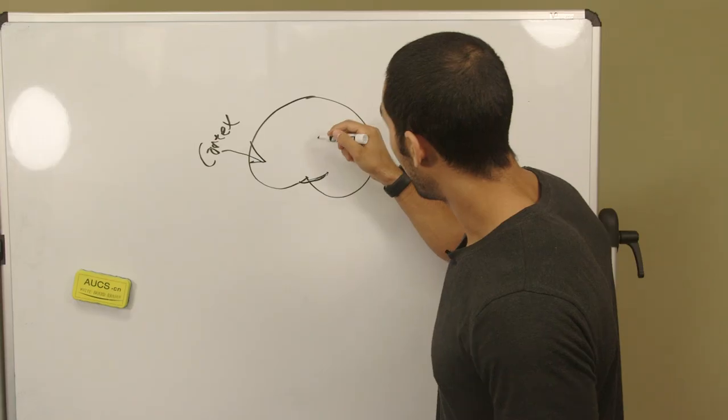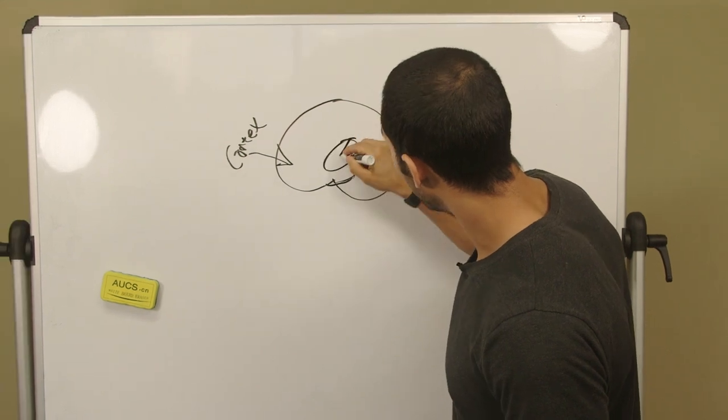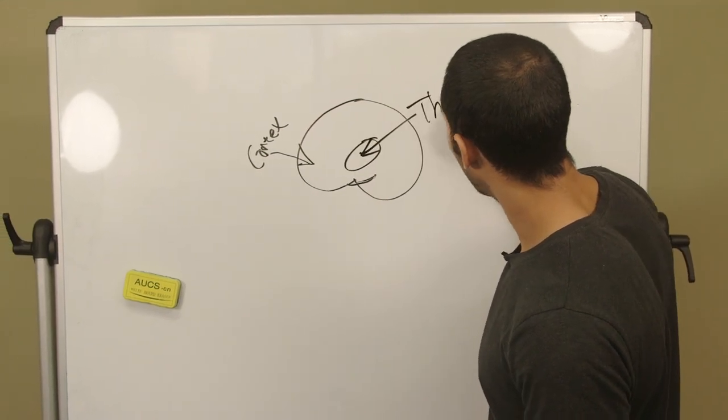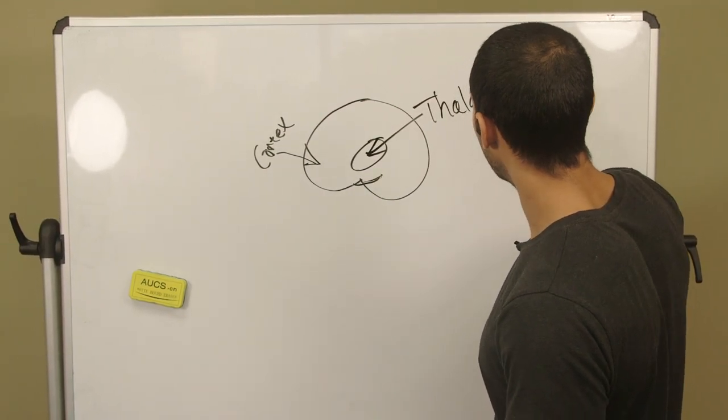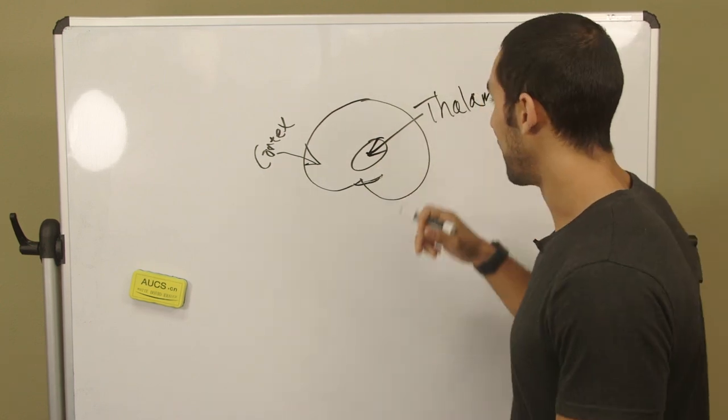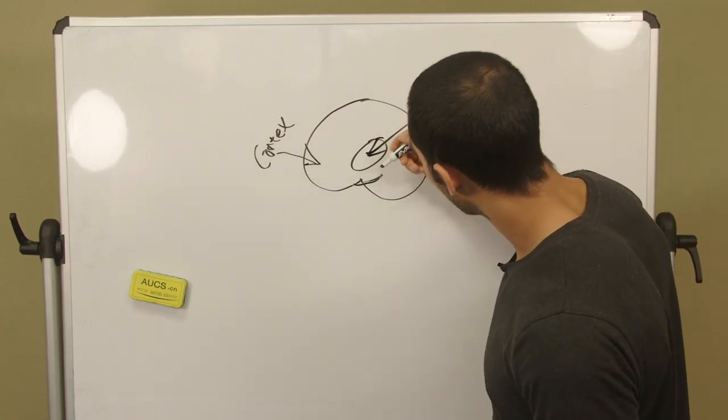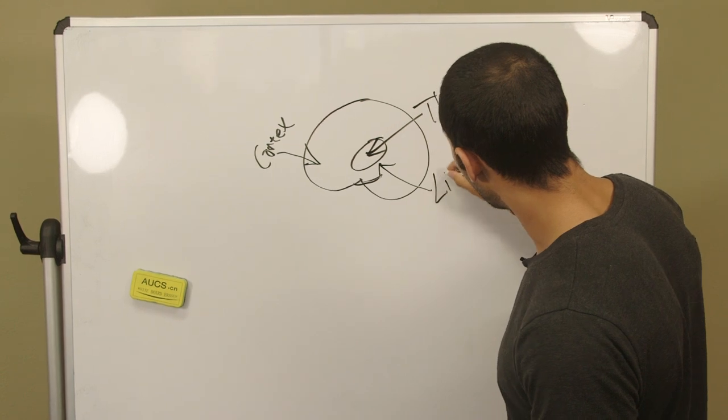Now you have two other areas. You have the thalamus, so the thalamus here, this is like a relay station for signals in the brain. The thalamus is just a relay station, so you have signals that go there.